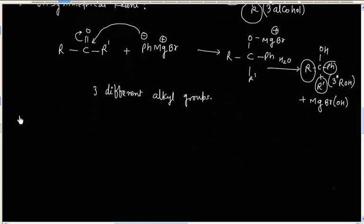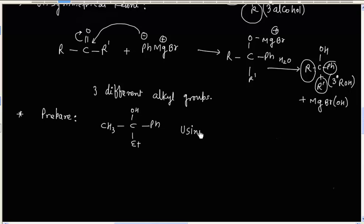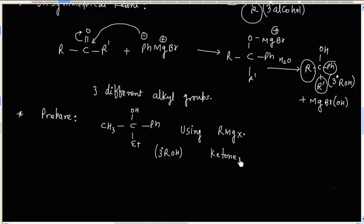Let us try a practice problem. If you have to prepare a given tertiary alcohol using Grignard reagent synthesis — since this is a tertiary alcohol, we use a ketone, because aldehyde gives either primary or secondary alcohol, and ketone gives tertiary alcohol. In this case we have three options: we can choose the methyl group, the ethyl group, or the phenyl group as the Grignard reagent. Let us explore these three options.